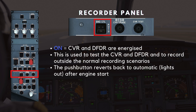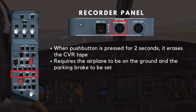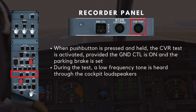The ground control push button reverts back to automatic after engine start. When the CVR erase push button is pressed for two seconds, it erases the CVR tape, provided the airplane is on the ground and the parking brake is set. When the CVR test push button is pressed and held, the CVR test is activated, provided the ground control is on and the parking brake is set. During the test, a low-frequency tone is heard through the cockpit loudspeakers.